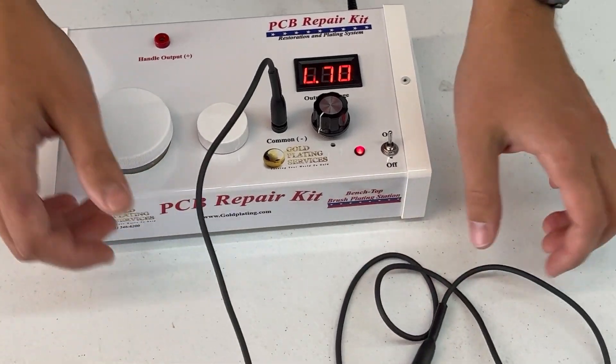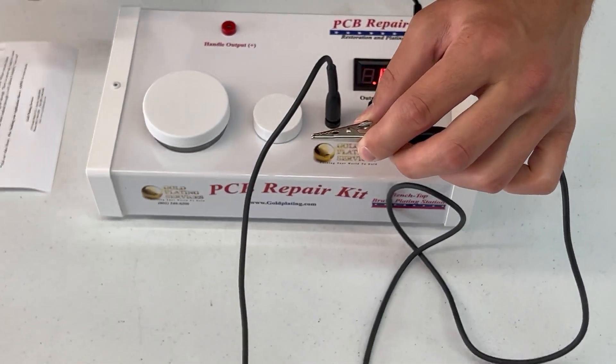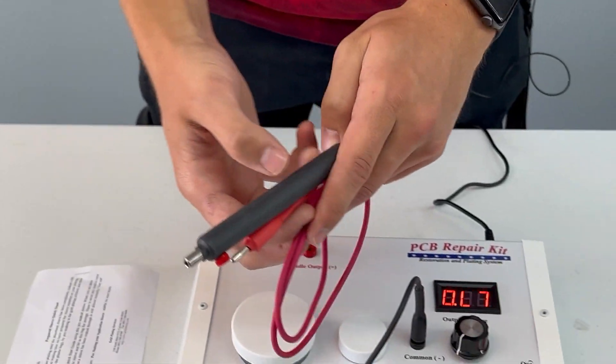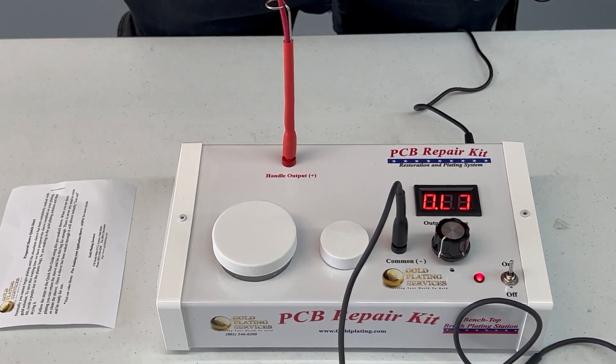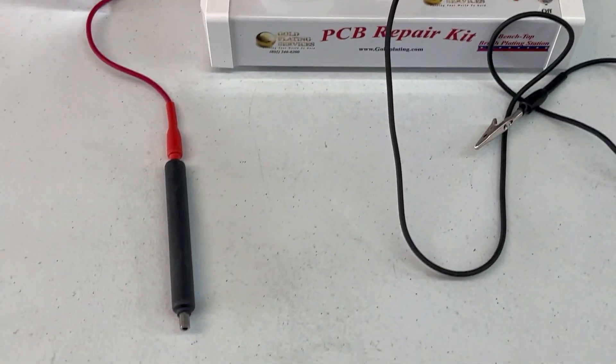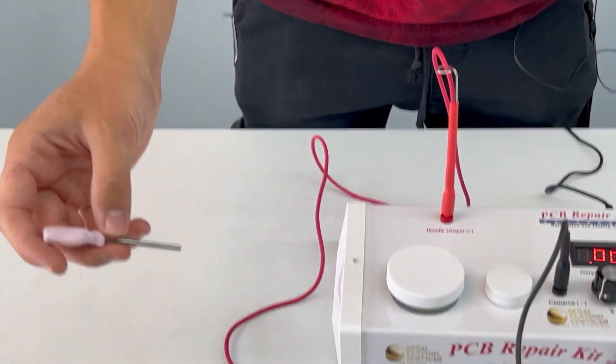This does have an alligator clip on it, so if you want to clip it onto your items that makes it easy. You also have your handle. You'll plug that into the positive port, and you can grab your bit with the pre-soaked gold sleeve on it.